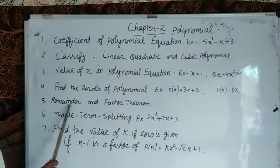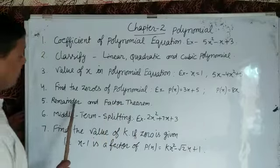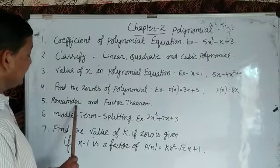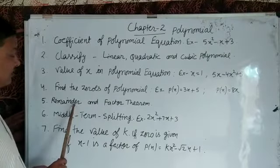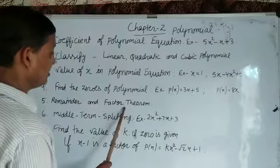Now, the fifth concept: remainder and factor theorem. When we put value of x in the given polynomial, the remainder is something, then that is called the remainder theorem. And if the remainder is 0, then it is called the factor theorem.